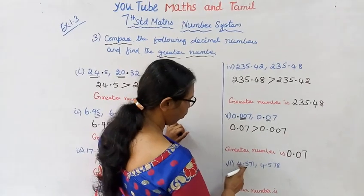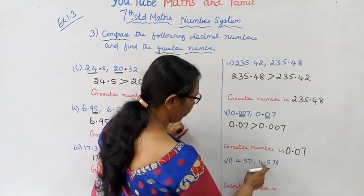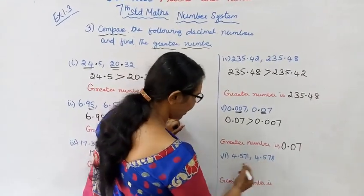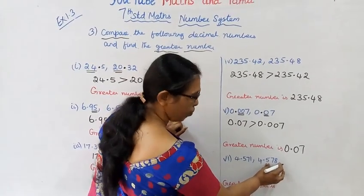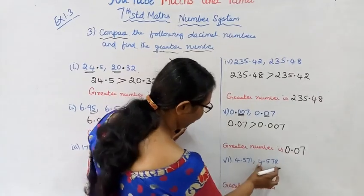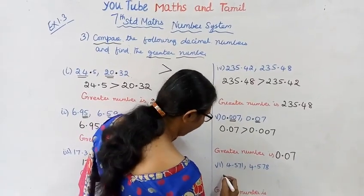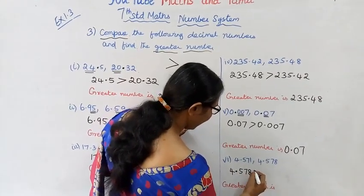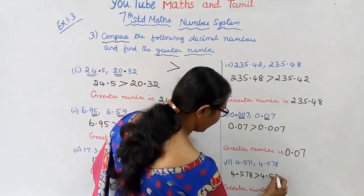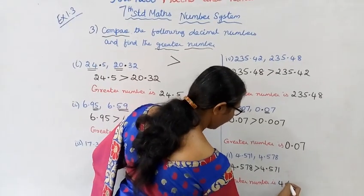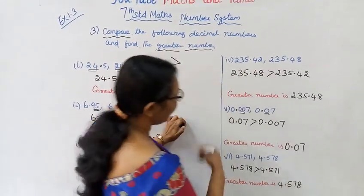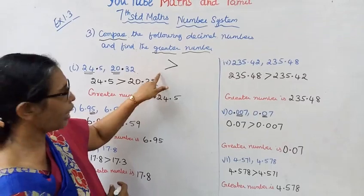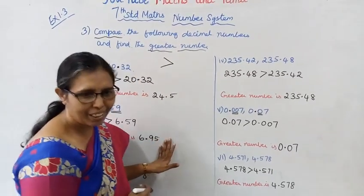Next: 4.571 and 4.578. Both have 4 before the decimal. After the decimal, compare 571 and 578. Since 578 is greater, 4.578 is greater than 4.571. Greater number is 4.578.